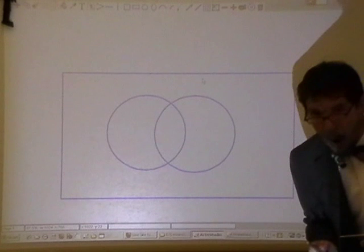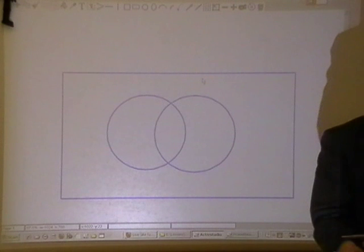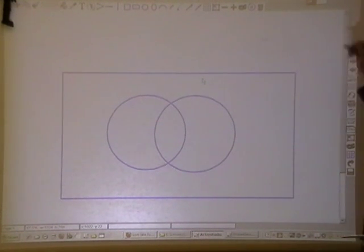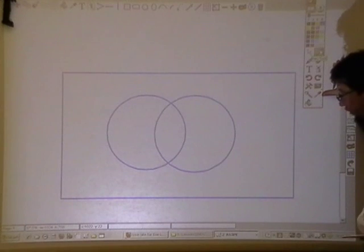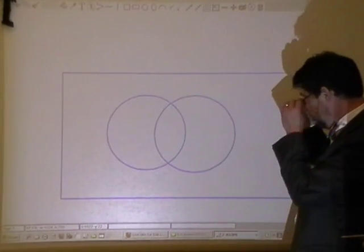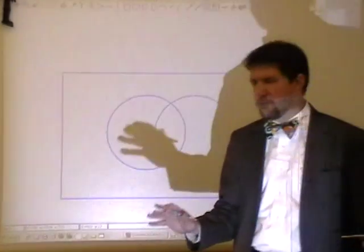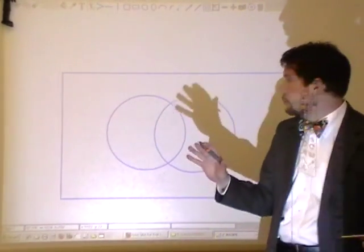We're on page 362 of the book. Number three: Real estate ads suggest that 64% of homes for sale have garages, 21% have swimming pools, and 17% have both features. What is the probability that a home for sale has... I've got a Venn diagram with two different variables going on here. Here is my sample space in the rectangle, and I've got two variables talking about homes for sale.